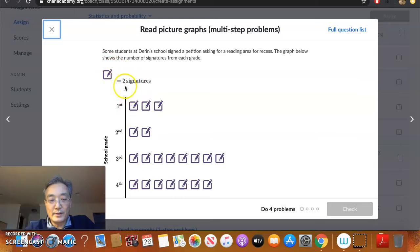Now, the reason why each picture could represent two signatures, of course, is if each picture only represented one, then you would have to have double the number of pictures, correct? Thus creating a bigger graph. So by doing two per picture, you're actually making the graph smaller and more compact. But you always have to look at the legend to see what each picture represents.